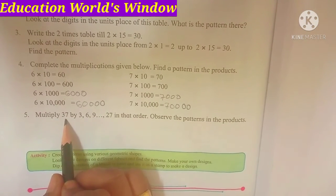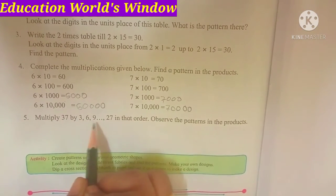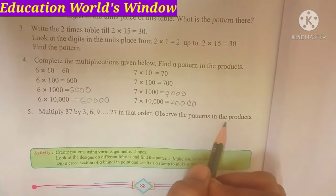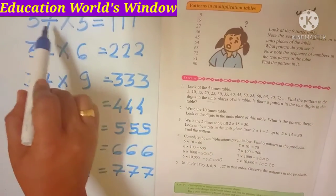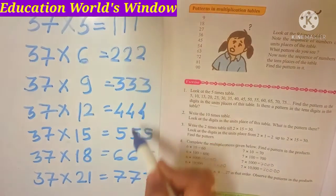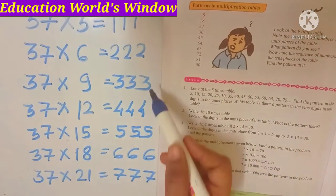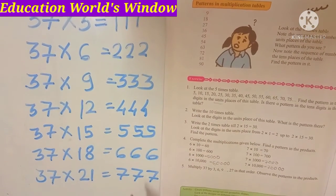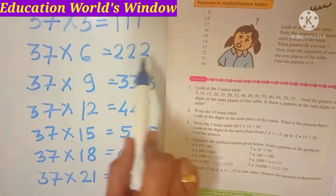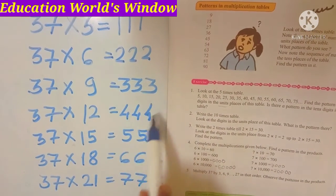666 by 3, 6, 9, 27 — in that order. Observe the patterns in the products. We multiply 37. How do we multiply? 3, 6, 9 — that's 27. We multiply the patterns in that order: 3, 6, 9, 27. What patterns are there? The pattern is 1, 1, 2, 2, 3, 4, 4, 5, 5, 6, 6, 7, 7 — that's the pattern. 3 times 1, 3 times 2, 3 times 3, 4 times 4 — that's the pattern.